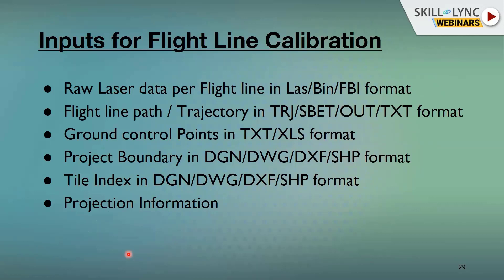The inputs from airborne data survey include raw laser data in LAS, LBI, or FBI format, and flight line trajectory, which is critically important. Without the trajectory, no further processing can be done. The trajectory stores timestamp values that synchronize the raw laser data. If timestamps are lost in the LiDAR data or trajectory, you cannot proceed with calibration, classification, or output generation.